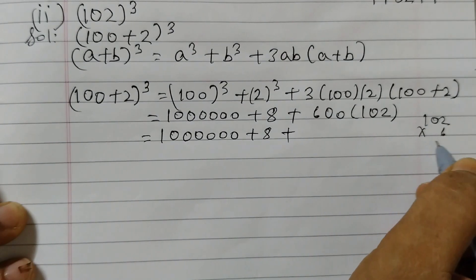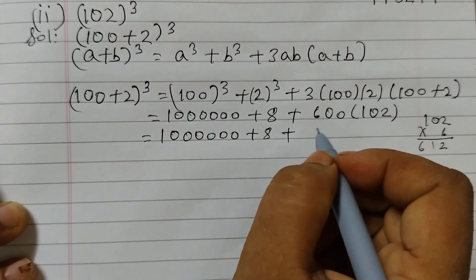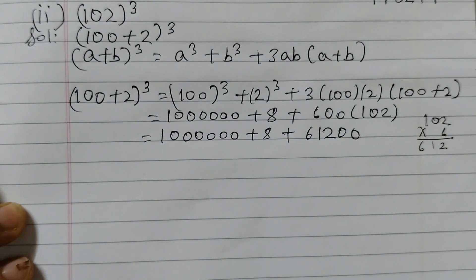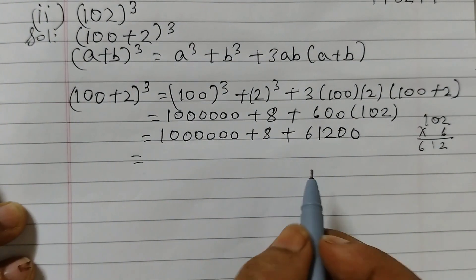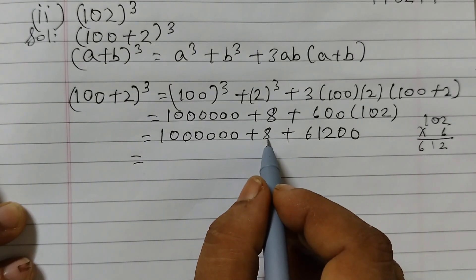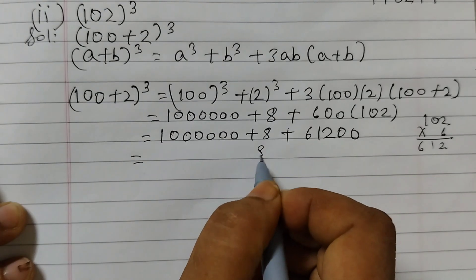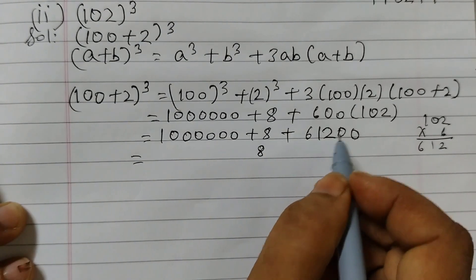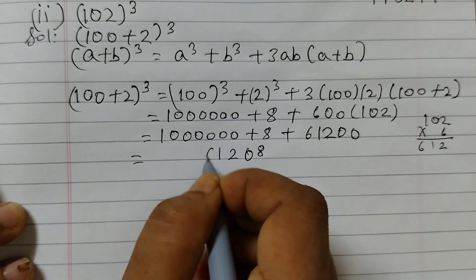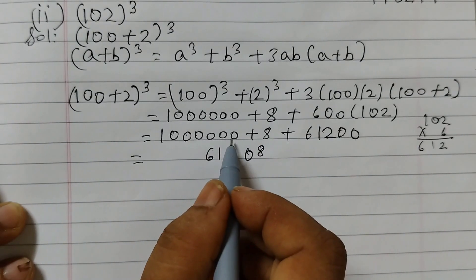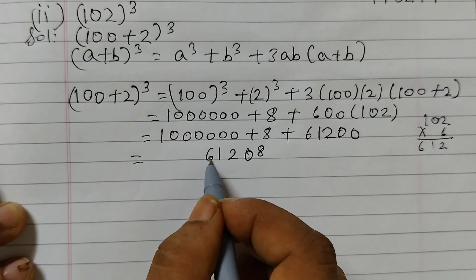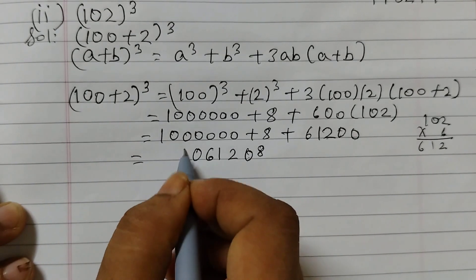We calculate 102 × 6: 6 × 2 = 12, 6 × 1 = 6, giving 612. Then 600 × 102 = 61,200. Adding up: 1,000,000 + 8 + 61,200. The unit digit is 8, then 0, 0, then 2, 1, 6 — giving 1,061,208. So 102³ = 1,061,208.